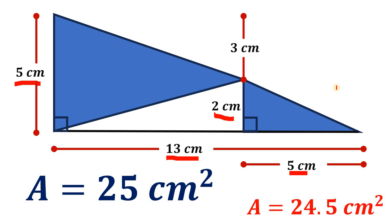It looks like a similar triangle but it's not. Of course, because the ratio of the corresponding sides is not equal. Therefore, the correct answer to this question is not 24.5 square centimeters, but it is 25 square centimeters.